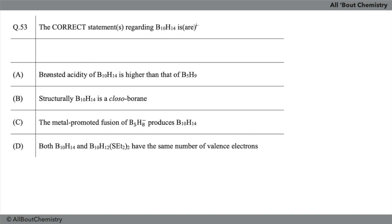It is already given to you, but still if you want me to explain it: The correct statement regarding B10H14 - Bronsted acidity of B10H14 is higher than that of B5H9. Structurally B10H14 is a closo-borane. The metal-promoted fusion of B5H9- produces B10H14. Both B10H14 and B10H12(SEt2)2 have the same number of valence electrons.